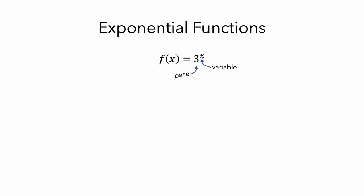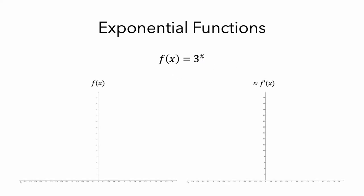Let's take a moment to think about what this would look like if you graphed it. Here are axes that we'll use to graph f and an approximation of its derivative. Here is a graph of f. Next, let's think about what the graph of its derivative might look like. We'll start by picking a fixed delta x and look at how delta y and delta x change together as we draw the graph of f.